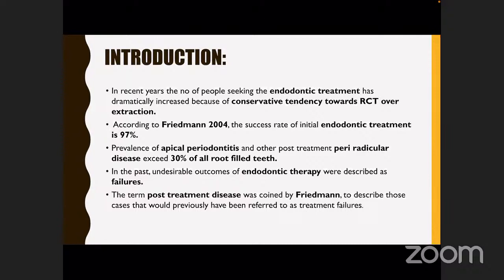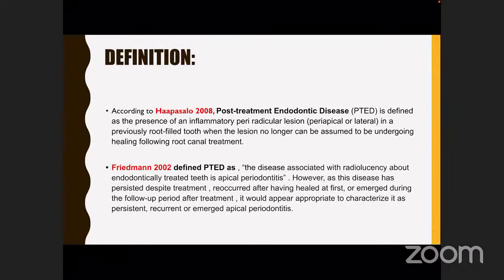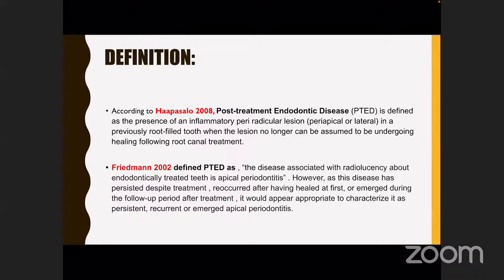In 2008, Hapasalo defined post-treatment endodontic disease as the presence of an inflammatory periradicular lesion, present periapically or laterally in a previously root-filled root, when the lesion can no longer be assumed to be undergoing healing. In 2002, Friedman also defined it as disease associated with radiolucency about endodontically treated teeth with apical periodontitis — characterized as persistent, recurrent, or emerged apical periodontitis.